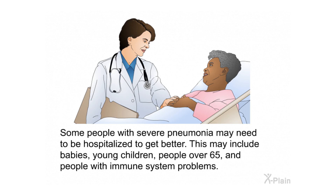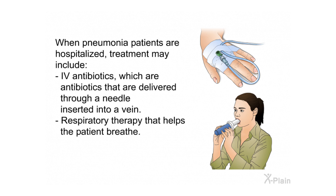Some people with severe pneumonia may need to be hospitalized, including babies, young children, people over 65, and those with immune system problems. When hospitalized, treatment may include IV antibiotics — delivered through a needle inserted into a vein — and respiratory therapy that helps the patient breathe.